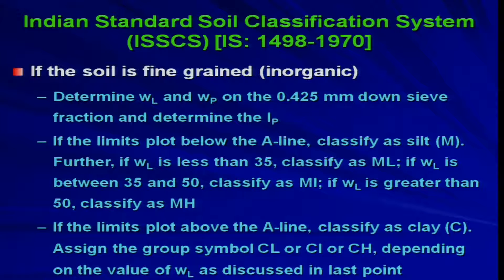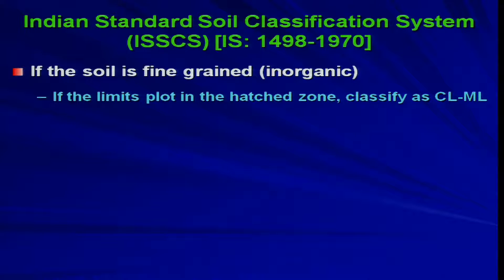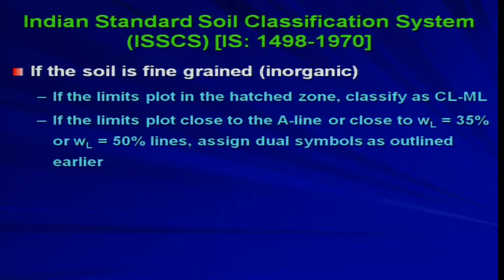If the limits plot above the A-line, classify as clay and assign the group symbol as CL, CI, or CH depending on whether the liquid limit is below 35 percent, between 35 and 50 percent, or above 50 percent. If the limits plot in the hatched zone in the plasticity chart, classify the soil as CL-ML (dual symbol). If the limits plot close to the A-line or close to liquid limit equal to 35 or 50 percent lines, assign dual symbols as outlined earlier.